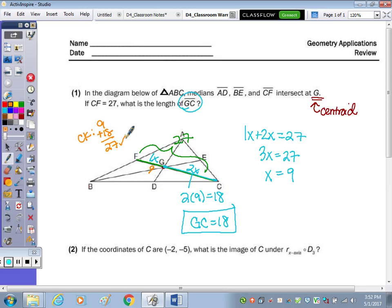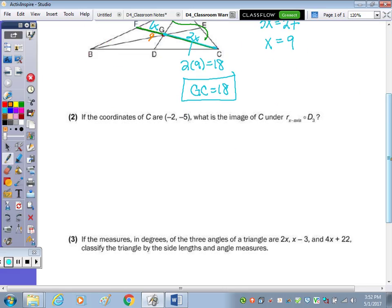Number 2 is a transformation question. So I'd be sure to copy all your transformation rules onto your reference sheet for your test. And it's a composition. It says, if the coordinates of C are (-2, -5), what is the image under the composition of a reflection in the x-axis and a dilation of 3?